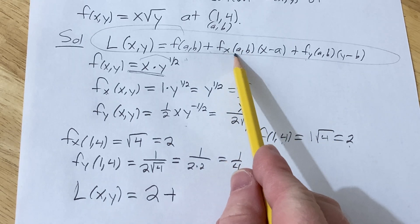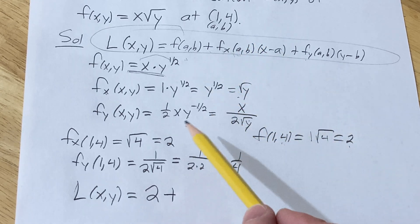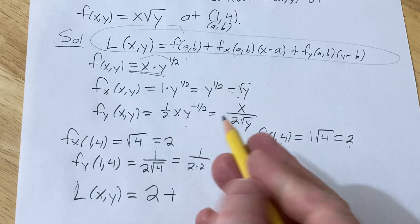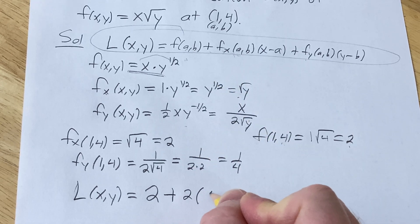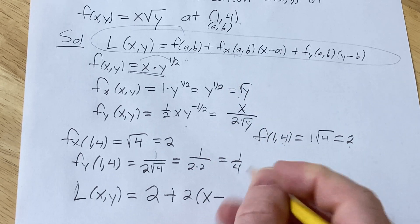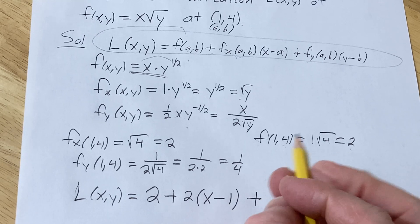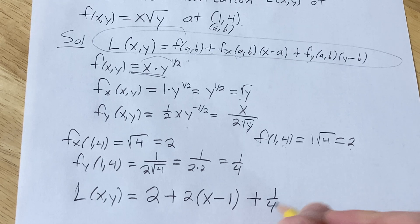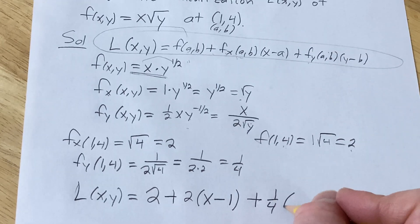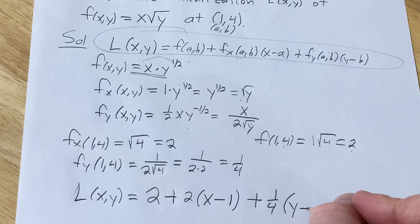And then this one here. We worked it out. It's right here. It's 2. So it'll be 2 times (x minus a). a is 1. And then plus. And then this one is 1/4, right? That's this one. And then (y minus 4).